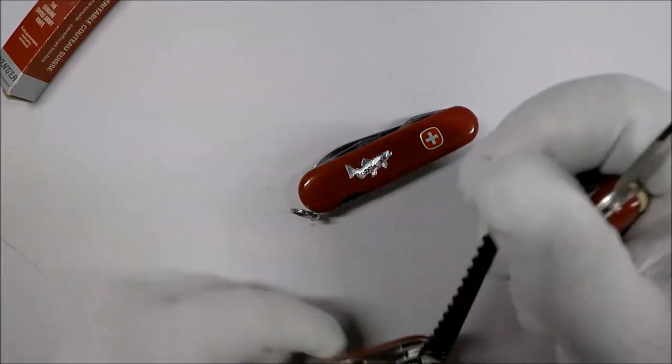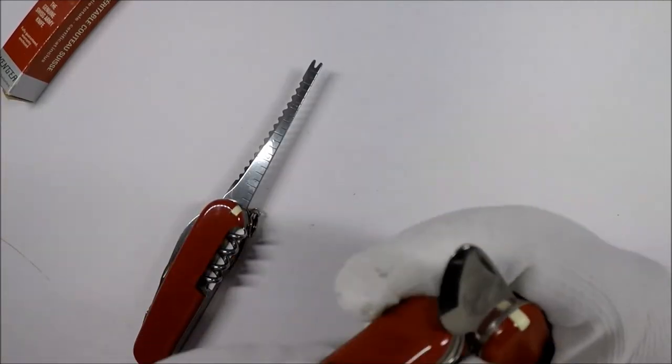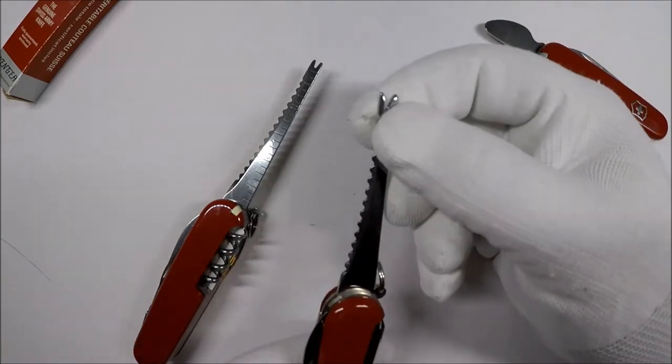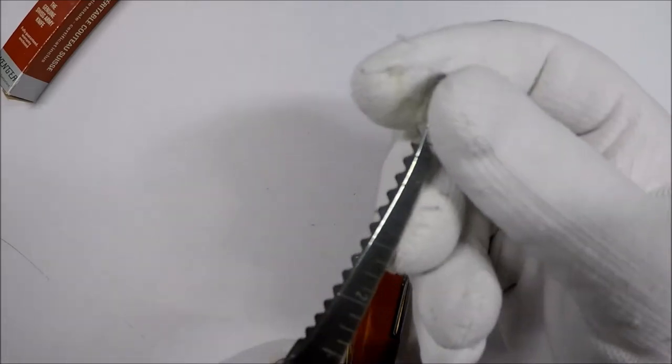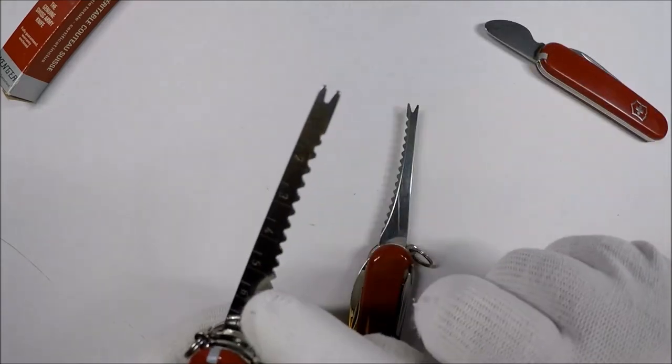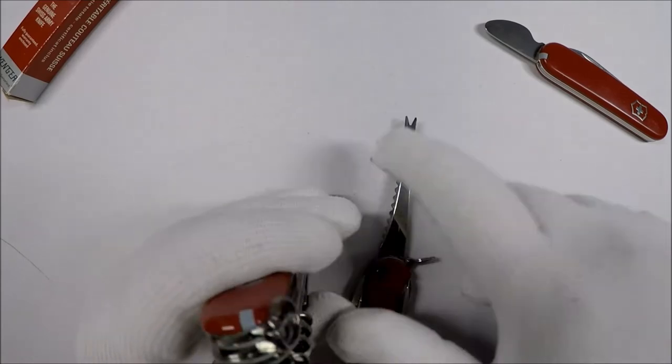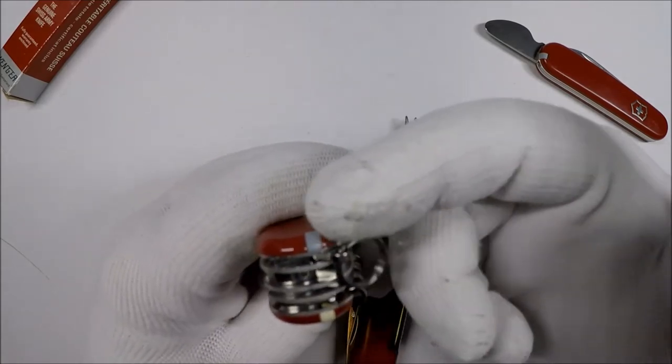And you get the Victorinox fish scaler. I tell you one thing that I think Winger missed was their fish scaler doesn't have a ruler on it, while the Victorinox one has inches and centimeters on it. Also, this one has scale tools. It has the tweezers and the toothpick.